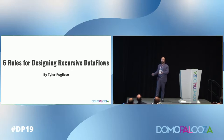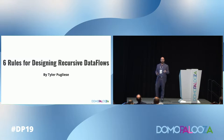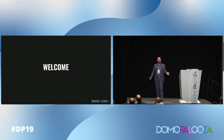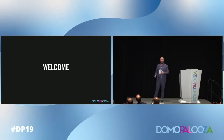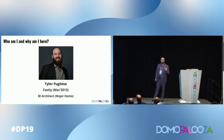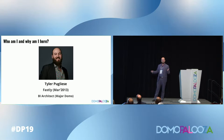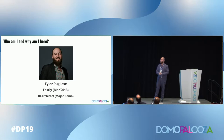Recursive data flows are what Domo refers to as the concept of putting data flows together in a recursive way. We refer to them as the magic circle at Fastly, so that's why there's some nomenclature differences. Welcome — I hope everyone's having a great Domo-palooza. It's my second time here and it's a great time. My name is Tyler Puglisi. I work at Fastly — I've been there since March of 2013. I'm our business intelligence architect, major Domo. About 57% of our company has a Domo account, so we have a lot of engagement and I help manage all of it.